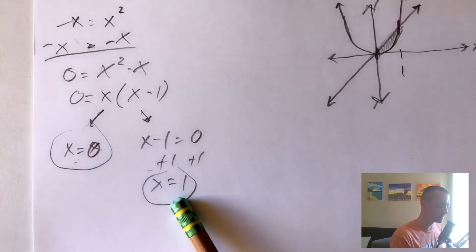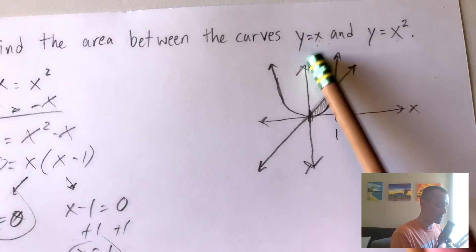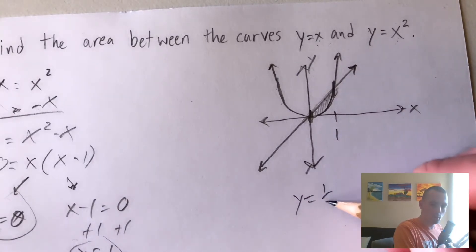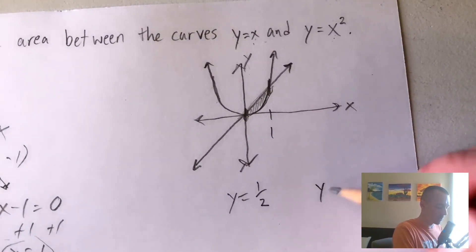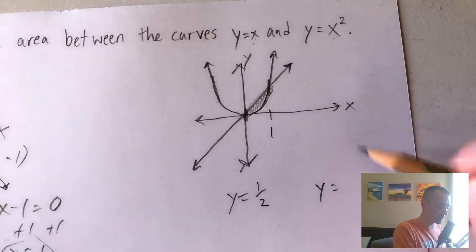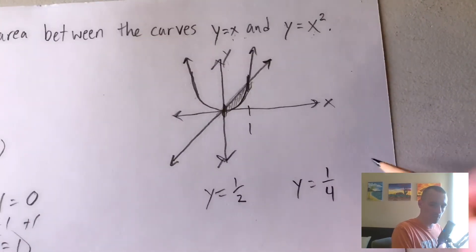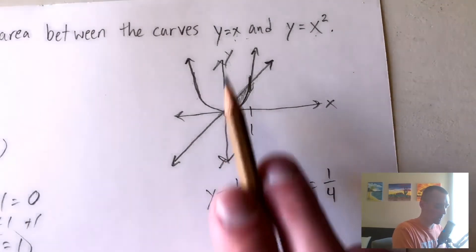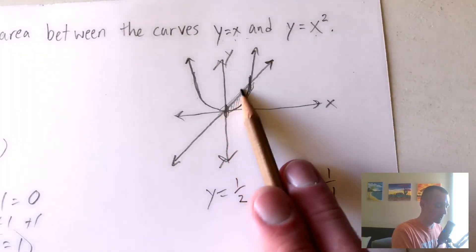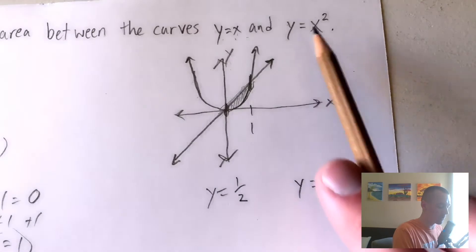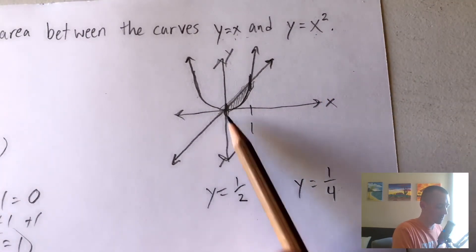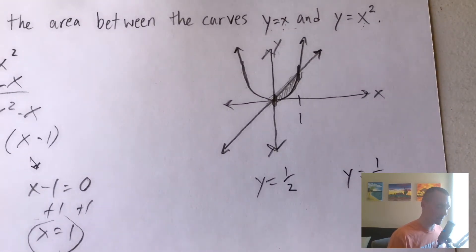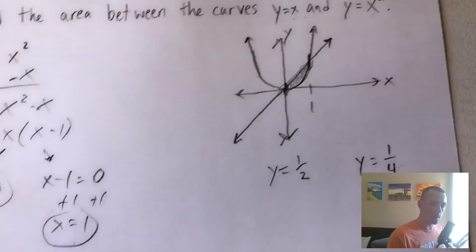Let's plug in x equals one half, since we know it's between zero and one. Plugging into y equals x gives y equals one half. Plugging into y equals x squared gives y equals one half squared, which is one fourth. Since one half is greater than one fourth, y equals x is our top function — which we can confirm in our graph — and y equals x squared is our bottom function.